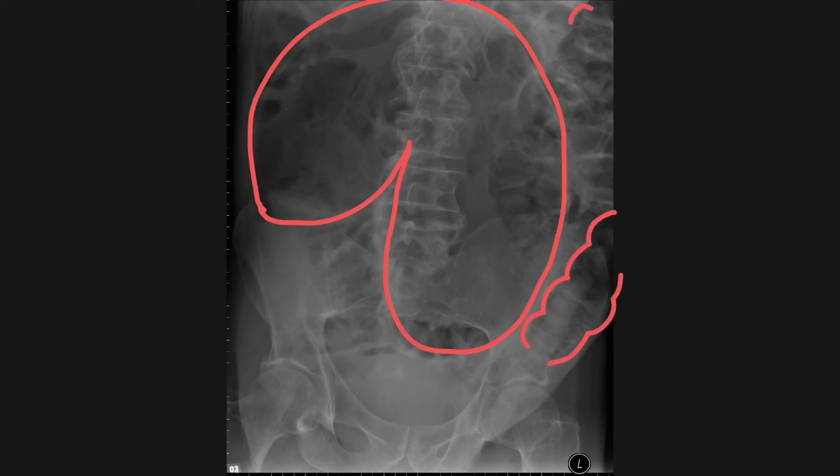we can see these dilated loops of bowel, which have haustra. This is large bowel. And this is the pelvic overlay sign that we mentioned before. And so this is actually sigmoid volvulus. And you can appreciate that it looks quite different to the cecal volvulus.